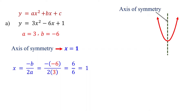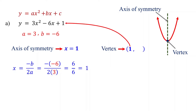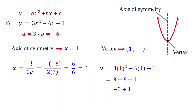Remember, the vertex lies on the axis of symmetry, so the x-coordinate of the vertex is 1. To find the y-coordinate of the vertex, substitute the x-coordinate back into the original function. This gives us negative 2. Therefore, the vertex is the point 1 comma negative 2.